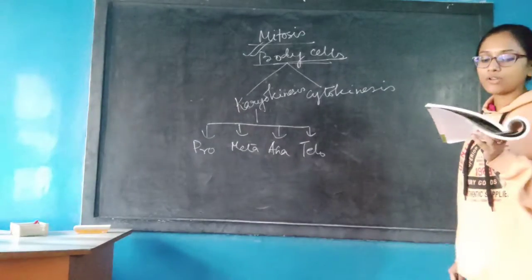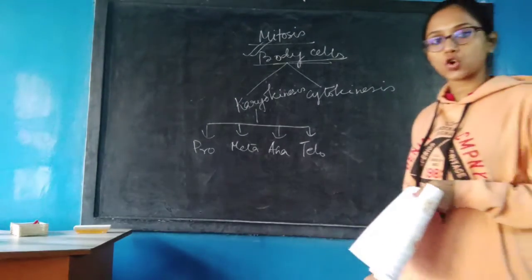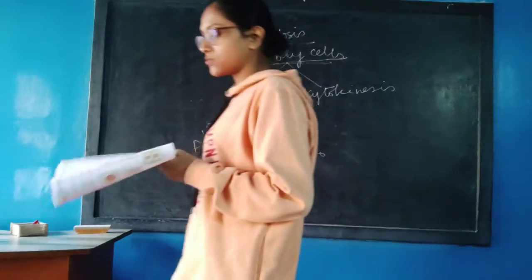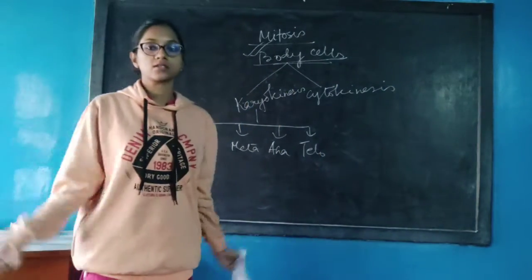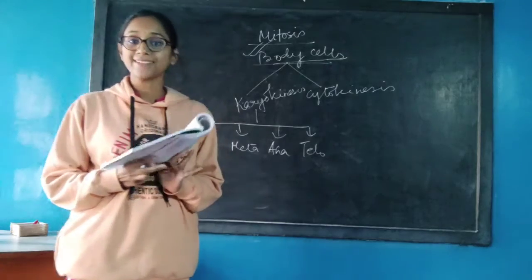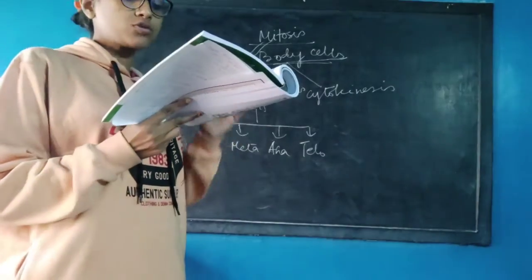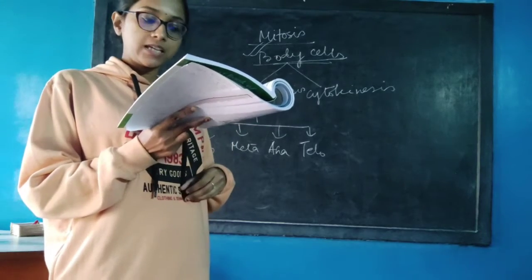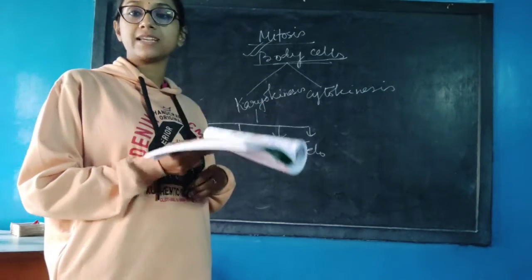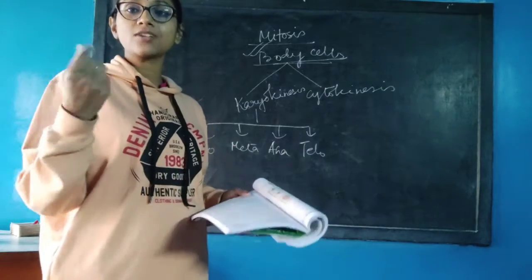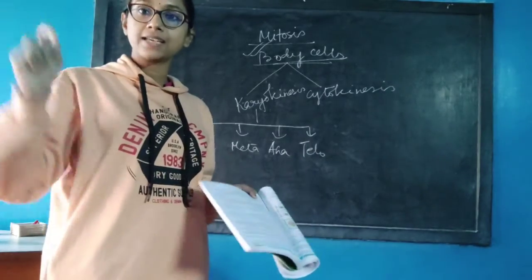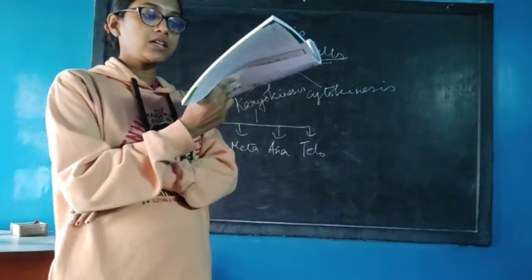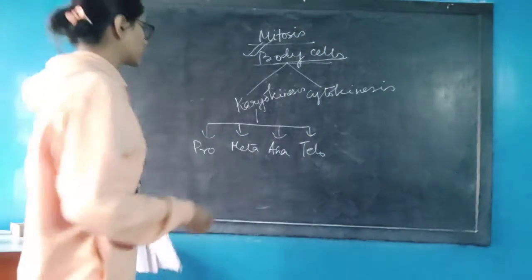First we will see about prophase. Here the chromosomes will condense, get shortened and thickened. The chromosomes get condensed due to the loss of water — due to dehydration. The chromosome is coiled by spiralization, forming bead-like structures called chromomeres.